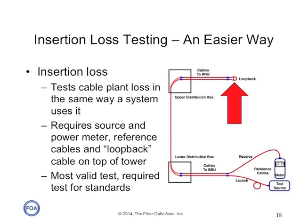Insertion loss testing uses a source and power meter to test the cable in the way it will be used by the communications equipment. However, it's very inconvenient for a technician to have either a source or a meter at the top of the tower. A simple way to solve this problem is to use a loopback — a duplex connector with a length of fiber that plugs into the cable at the top — allowing you to test both the fiber going up and the fiber coming down the tower with a meter and source at the bottom.